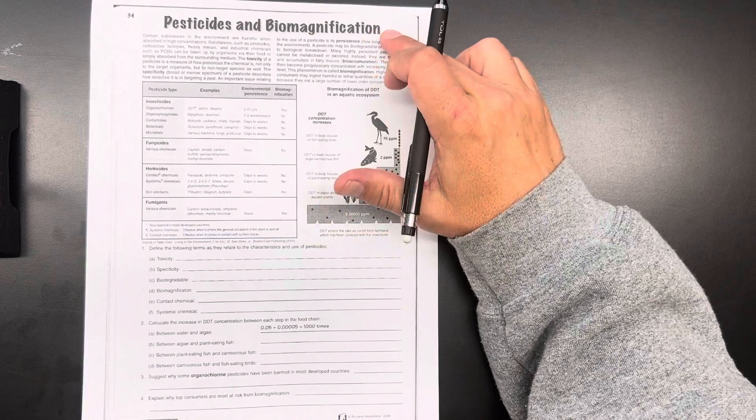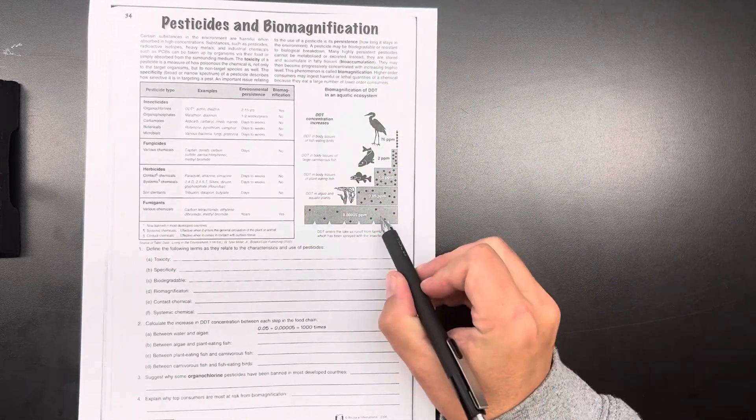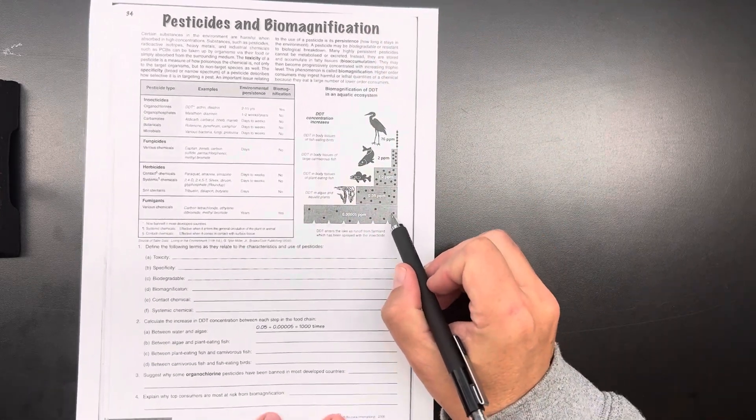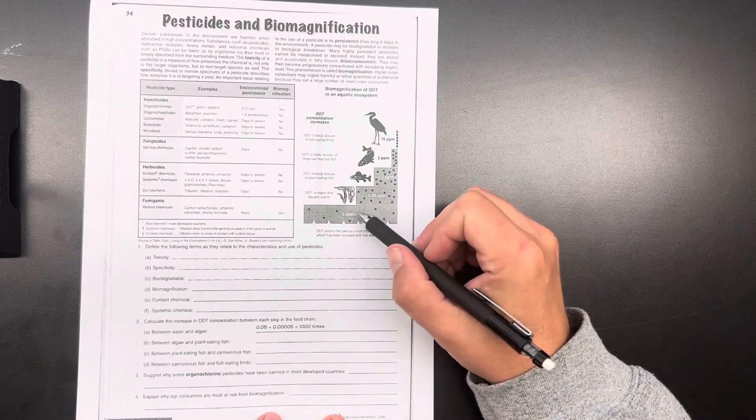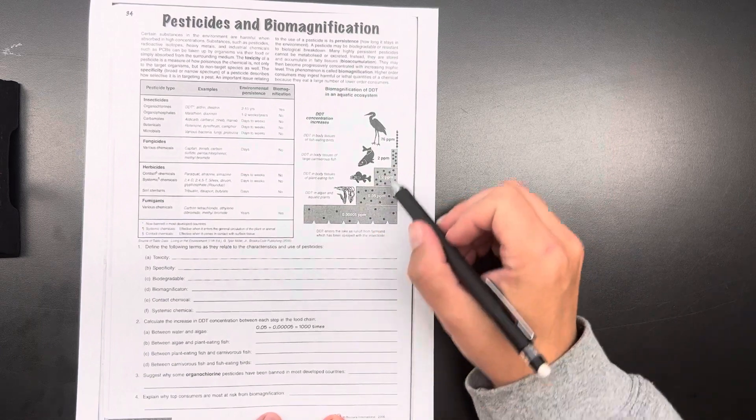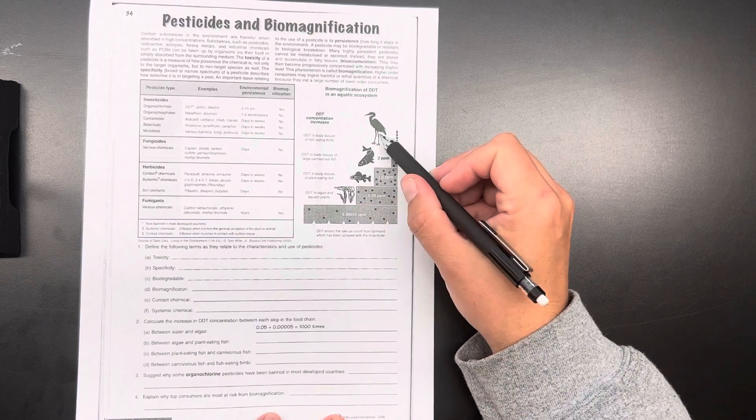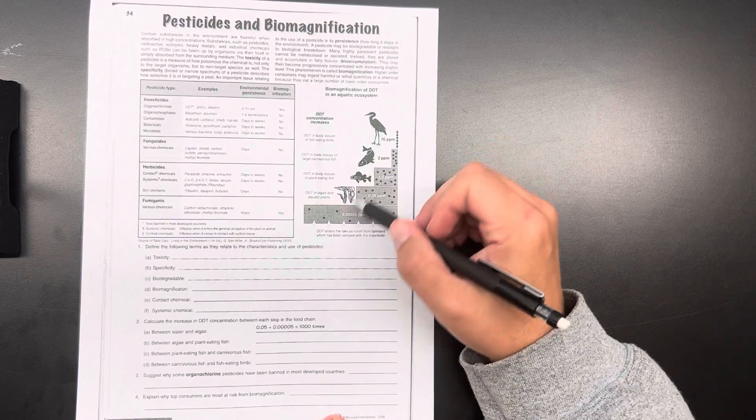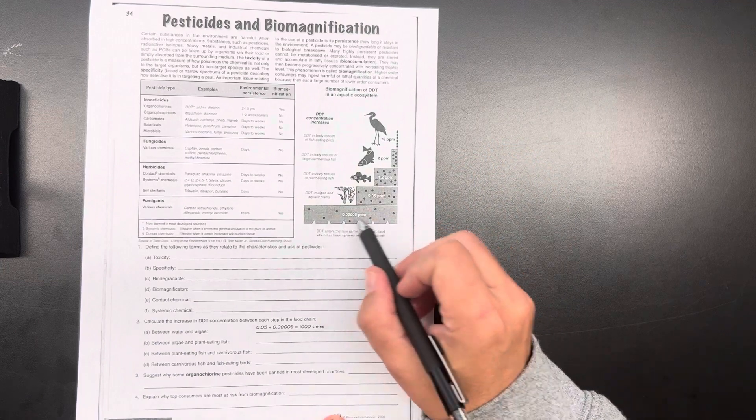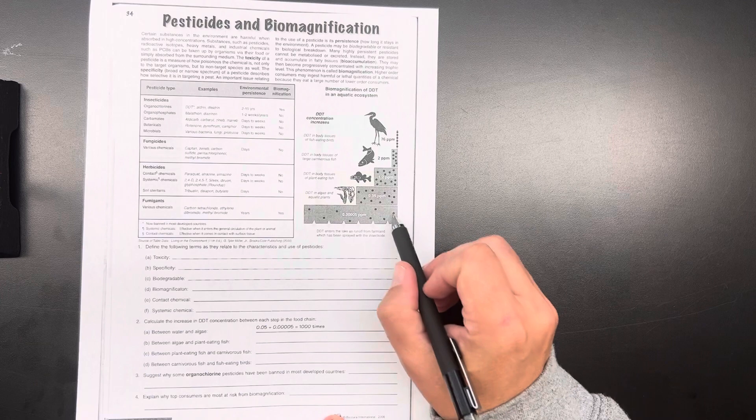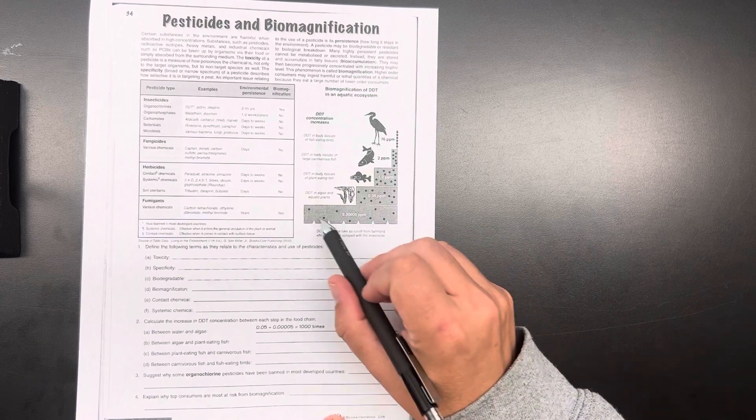And this idea of biomagnification means that these toxins, eventually as they move up the food chain, going from the bottom of the food chain down here up through the different predators, they become more concentrated. As you can see, the same amount of toxins here spread out over a huge number of organisms. Let's say this is all plankton or something.